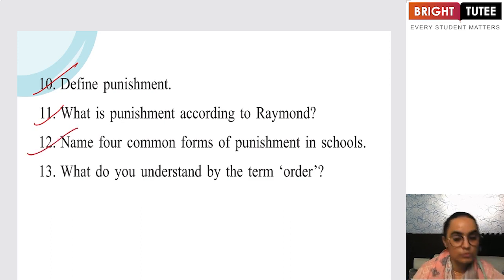Four common forms of punishments in schools: We have corporal punishment, reformatory punishment, monetary punishment, and compensatory punishment. You have to write four.